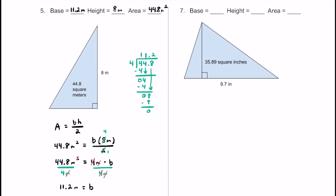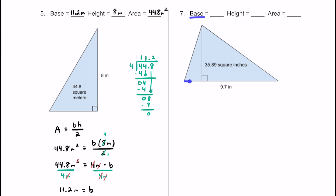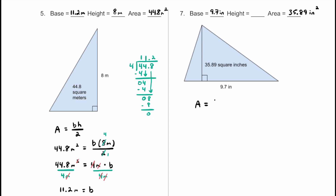Here's number 7. The base is 9.7 inches across the bottom. We don't know the height — that's the missing measurement — but we do know the area: 35.89 square inches. Let's set up a formula. I'll use area equals one-half multiplied by the base multiplied by the height, changing one-half to 0.5. So 35.89 inches squared equals 0.5 multiplied by 9.7 inches multiplied by h.